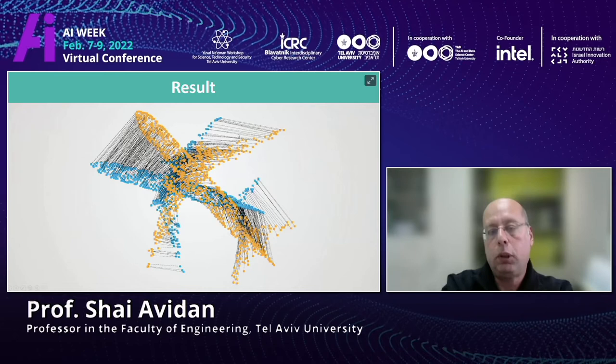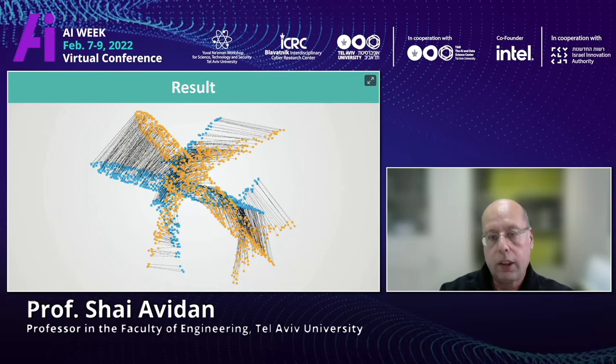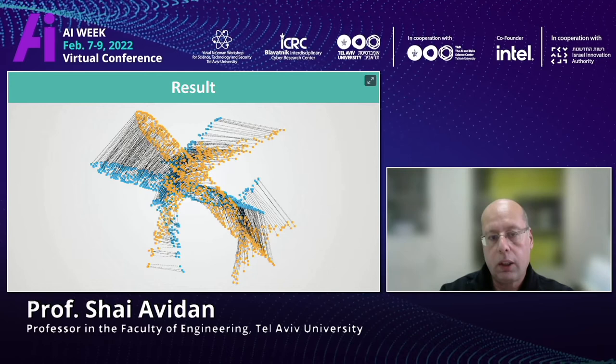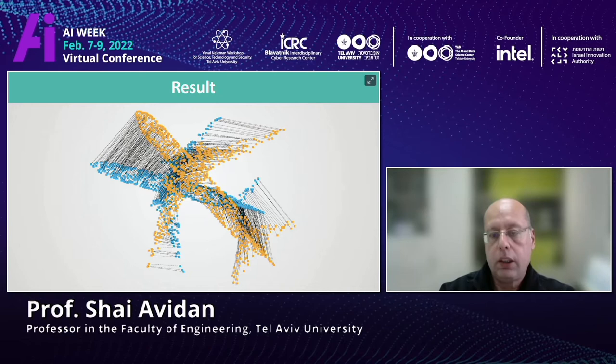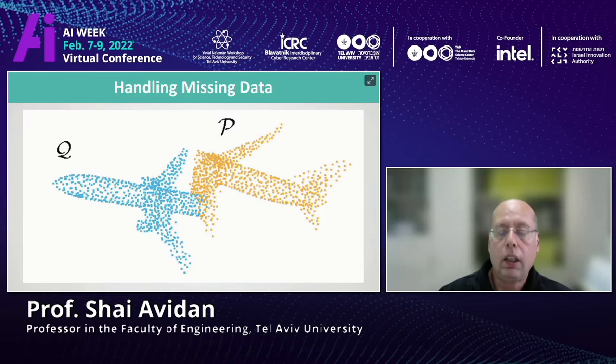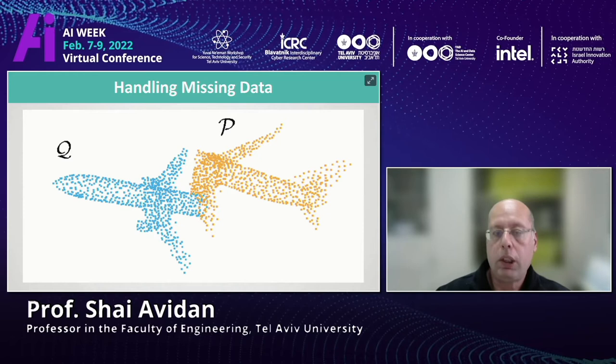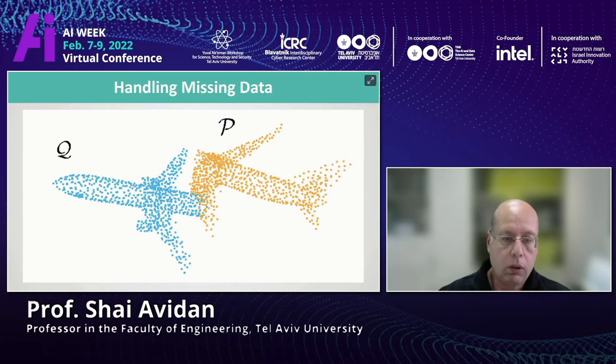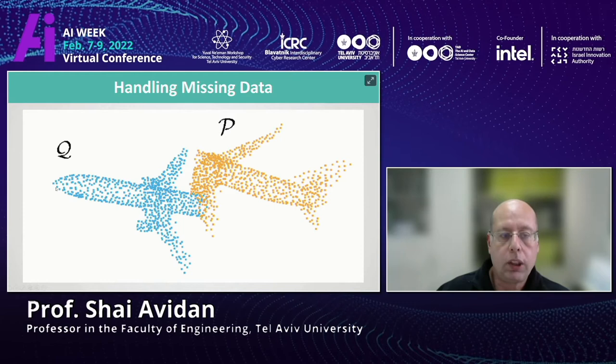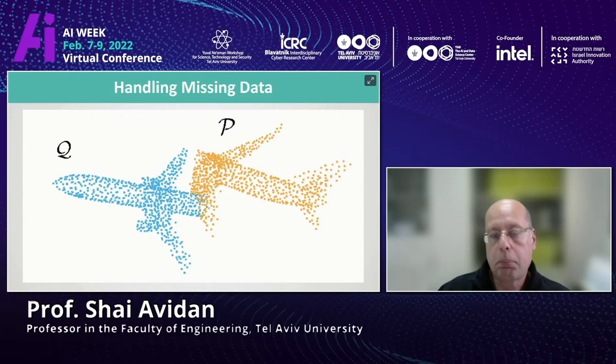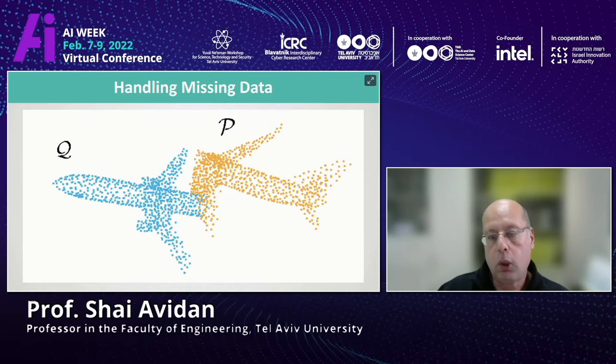Here is an example result: two point clouds — two scans of an airplane — and the algorithm properly matches points from the orange point cloud to the blue. In practice, however, you don't expect this clean data. In practice, you get partial overlap and missing parts. If you try to find rotation-translation that matches every point in one cloud to the other, you'll fail — there's clearly no matching point for some points in Q within point cloud P. That's where the gamma mask parameter comes in, allowing us to mask out points that do not have correspondences.